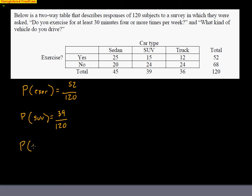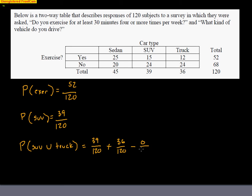What's the probability that you have an SUV or a truck? This is 'or'. I'll start with SUV — 39 out of 120 own an SUV — plus 36 out of 120 own a truck. Now, there's no way that you could own both a truck and an SUV, so I do need to subtract away that probability of both. But the probability of both is zero — zero people own both. So I don't have to worry about that overlap because there isn't any. It would be 39 plus 36, which is 75 out of 120.